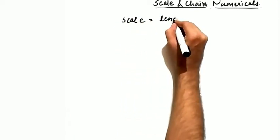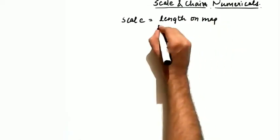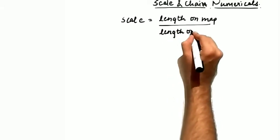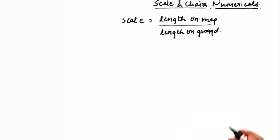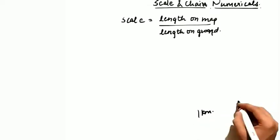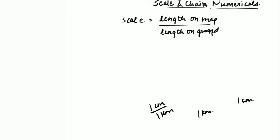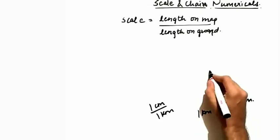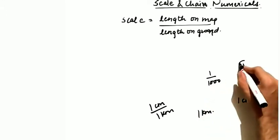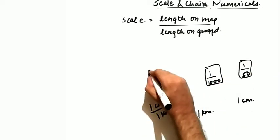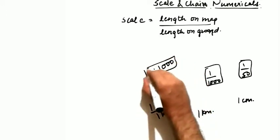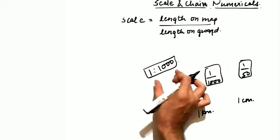Scale is length on the map divided by length on the ground. We cannot draw the actual ground length on the map. For example, if you measure one kilometer on the ground, you represent it as one centimeter on the map — so the scale is 1 cm to 1 km. When you equate units, you get the representative fraction (RF), like 1:2000 or 1:250. This is called the RF, written as a fraction.